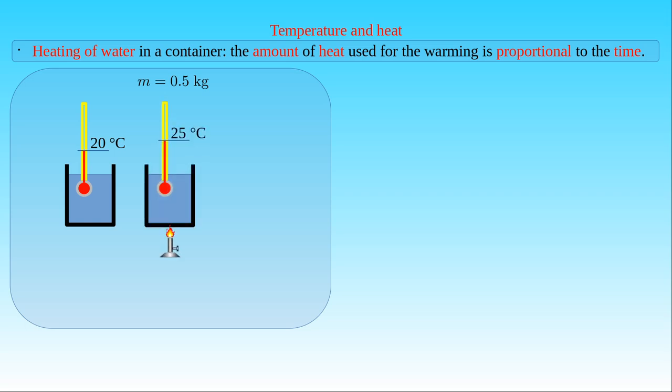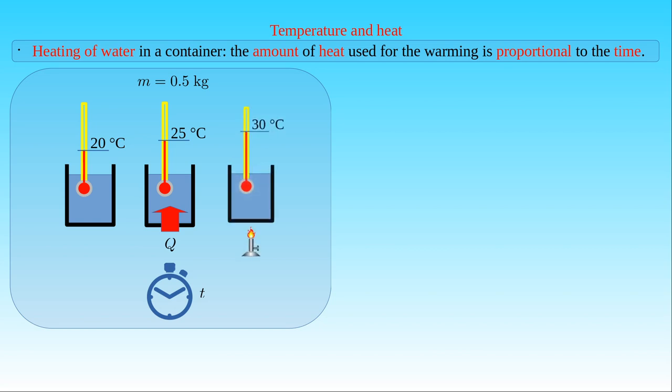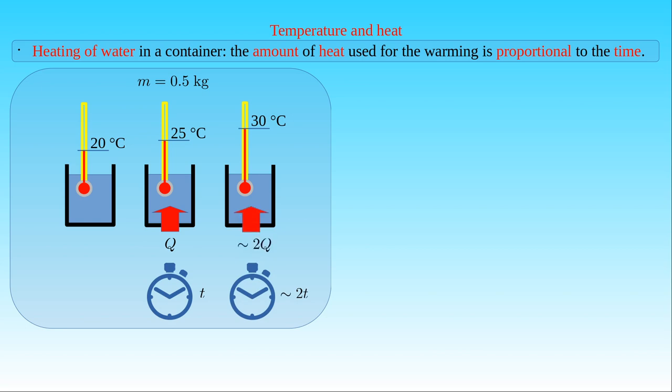When the temperature of the water reaches 25 degrees Celsius, we check the time elapsed from the beginning of heating, which we denote by T. Let Q denote the amount of heat transferred to the water during that time. If we continue warming the water until its temperature reaches 30 degrees Celsius, we find that the time of heating is about 2 times T. Since we assume that the transferred heat is proportional to this time interval, the heat absorbed by the liquid is about 2 times Q.